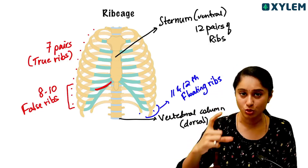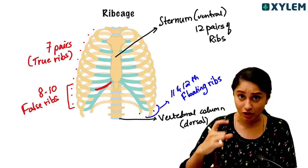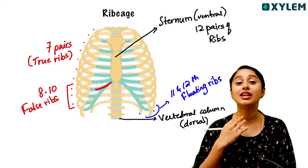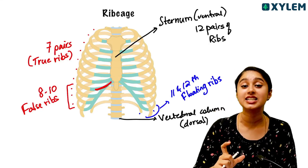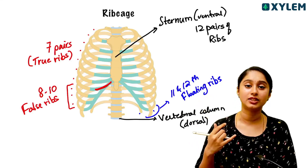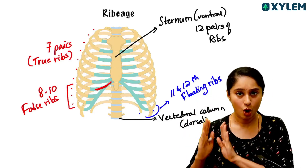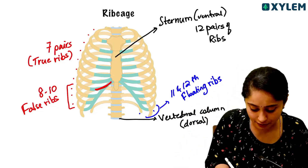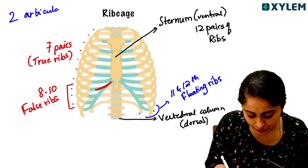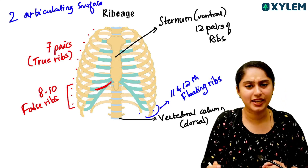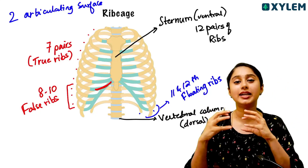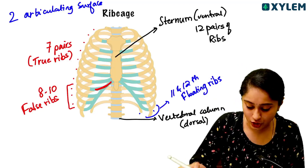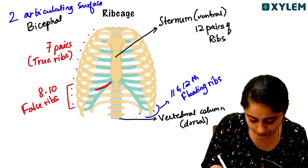So we have seven pairs of true ribs, three pairs of false ribs (eighth, ninth, and tenth), and two pairs of floating ribs. Ventrally, in front, it is connected to the sternum — sternum is the flat chest bone. Dorsally, it is directly connected to the vertebral column. When the ribs are attached to the vertebral column, there are two articulating surfaces.